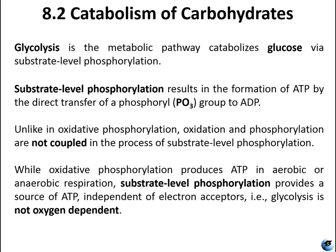Unlike oxidative phosphorylation, the oxidation and phosphorylation are not coupled. In oxidative phosphorylation in ETC, you need electron donors and acceptors — it's more complicated. Oxidative phosphorylation produces ATP in aerobic or anaerobic conditions: in aerobic respiration, oxygen is the final electron acceptor; in anaerobic respiration, an alternative organic compound serves as the electron acceptor. Substrate-level phosphorylation is totally independent of electron acceptors, meaning glycolysis does not depend on oxygen.